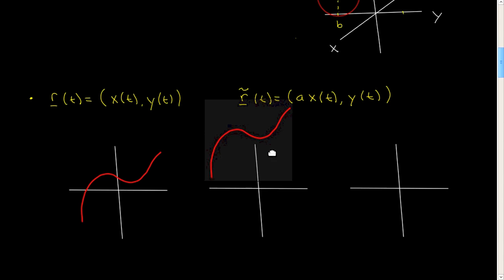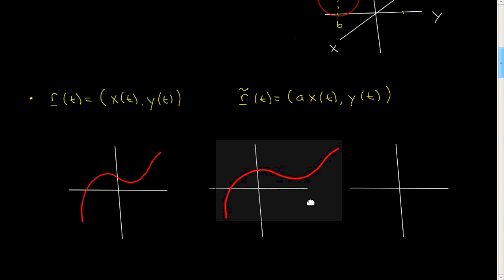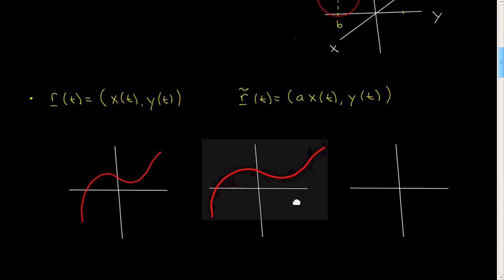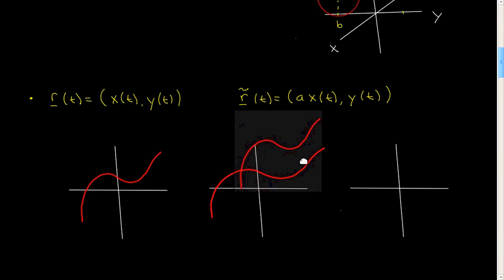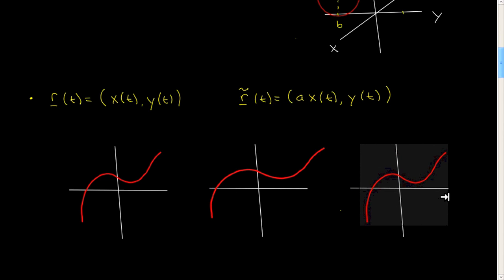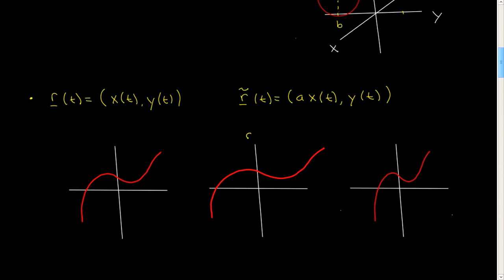I can just paste the previous curve. If A is greater than 1, the curve will look like something like this. And if A is less than 1 but positive, the curve will look like this. So this is A greater than 1, and this is A less than 1 but positive.